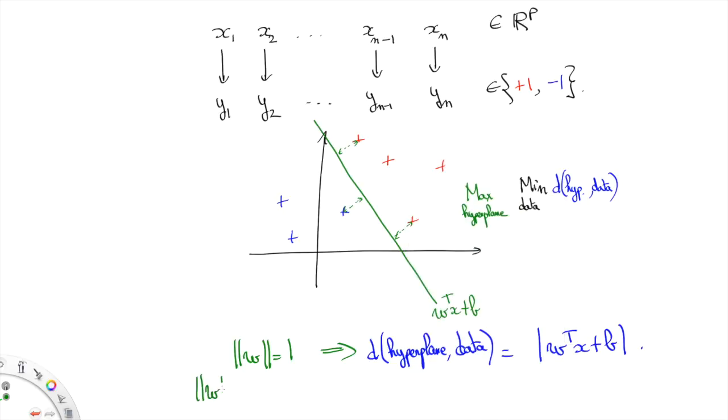One rather nice way of writing this is by noting that by choosing the right sign for W and B and assuming the hyperplane is consistent with the labels of the training data set, this distance can be written YI times W transpose XI plus B. You can test the two cases where YI equals plus 1 and YI equals minus 1 to convince yourself that this works.